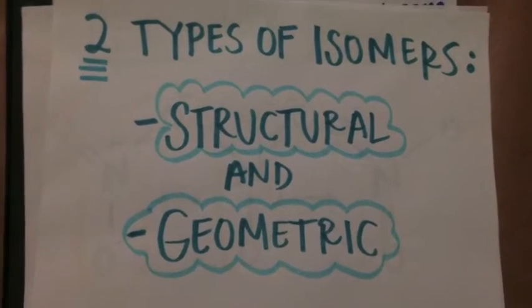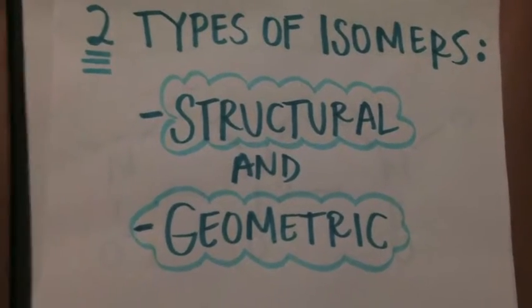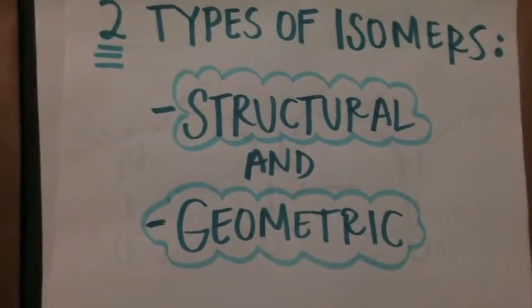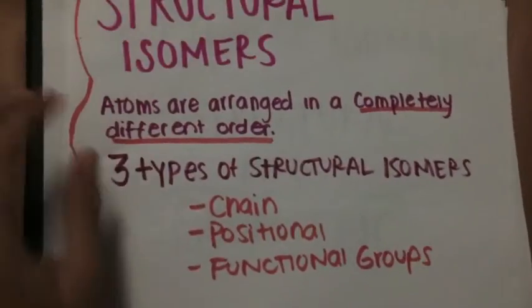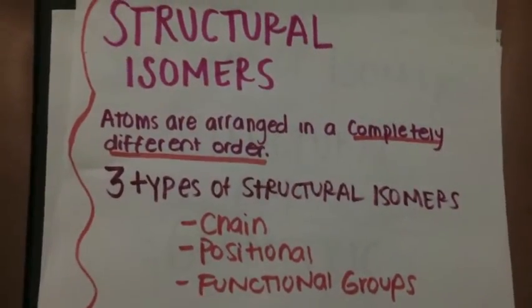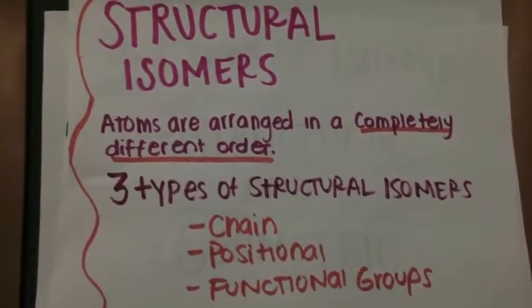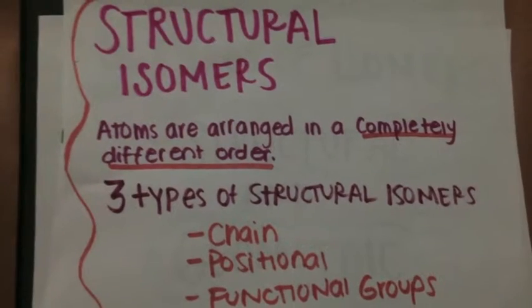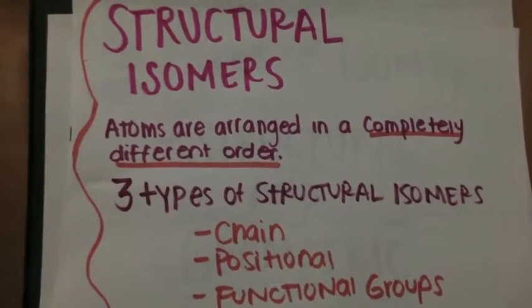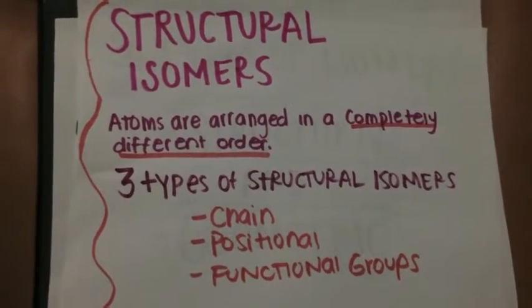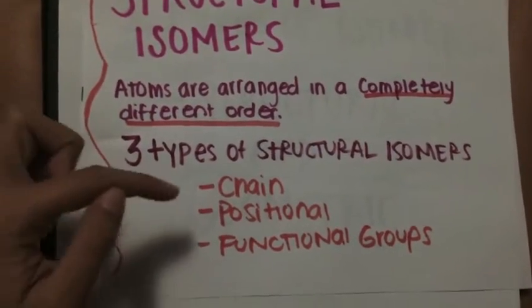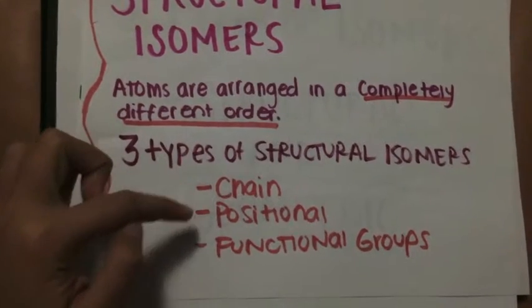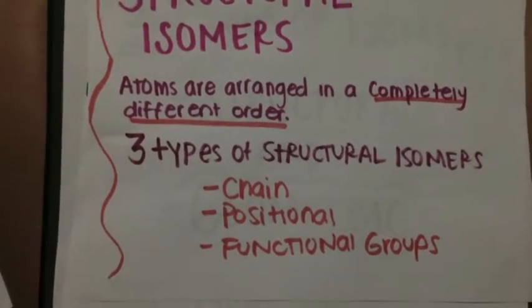There are two types of isomers, which are structural and geometric. In structural isomers, atoms are arranged in a completely different order, and there are three types of structural isomers: chain, positional, and functional groups.